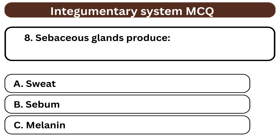Question 8. Sebaceous glands produce A. Sweat. B. Sebum. C. Melanin. The answer is B. Sebum.